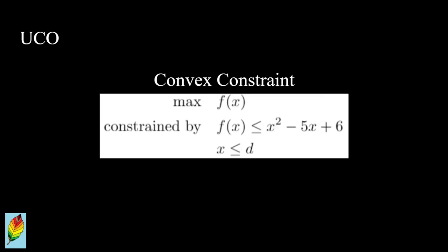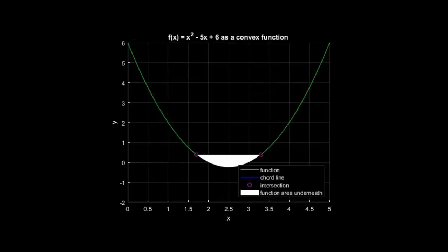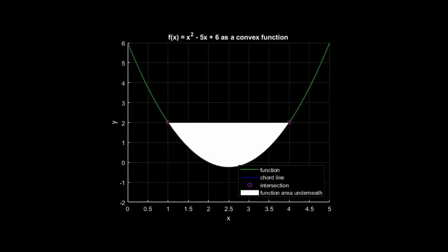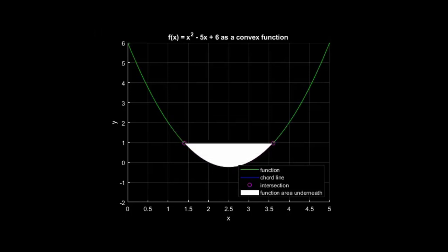Another example of these complex relationships is convex constraints, which is where the constraint is represented by a function that can have a chord line drawn from one end to another, and that line would never be below the original function.